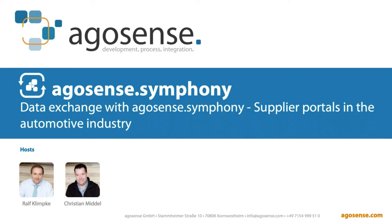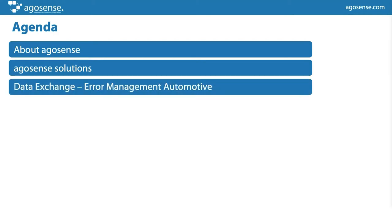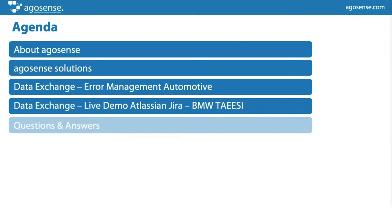Let's come to the first slide — the agenda. In the automotive world, we have a lot of deep cooperation between suppliers and car manufacturers. What we want to show today is one possible solution for how this deep cooperation can work, where suppliers and OEMs exchange defect management data between their companies in terms of software and system development. This is where we have specialized our product.